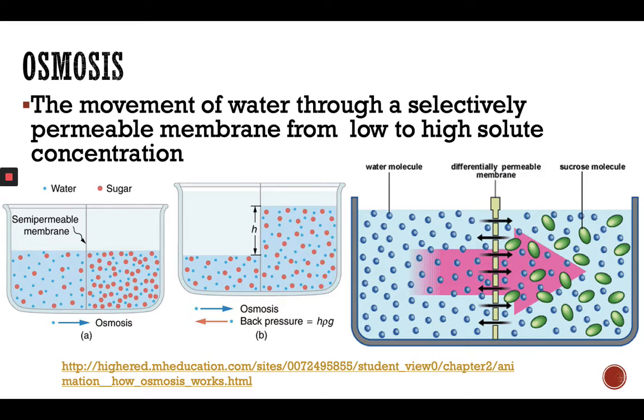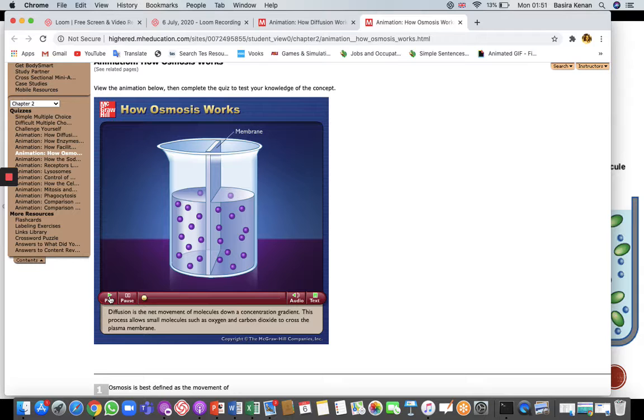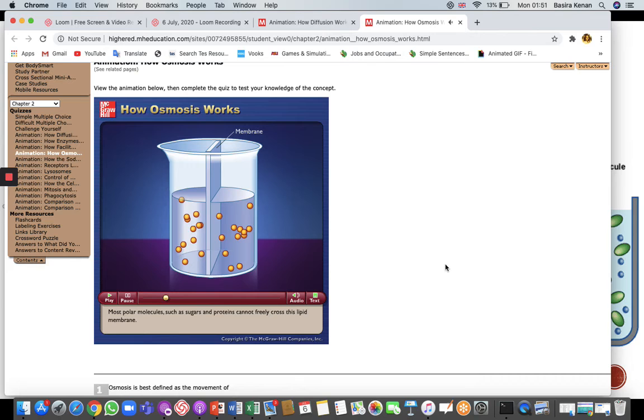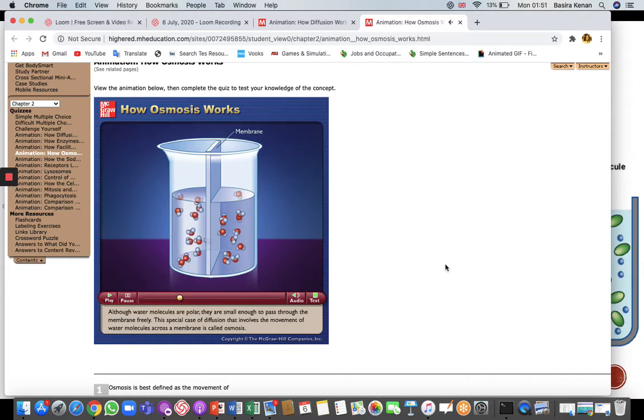Here we have a video. Diffusion is the net movement of molecules down a concentration gradient. This process allows small molecules such as oxygen and carbon dioxide to cross the plasma membrane. Most polar molecules such as sugars and proteins cannot freely cross this lipid membrane. Although water molecules are polar, they are small enough to pass through the membrane freely. This special case of diffusion that involves the movement of water molecules across a membrane is called osmosis.